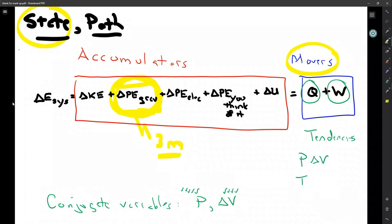So we call these things here in these accumulators, we call them state variables, because they have a final value, a difference between your initial state, in this case, at the bottom of the stairs, and your final state, in this case, the top of the stairs.